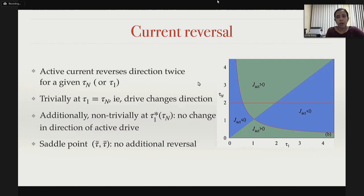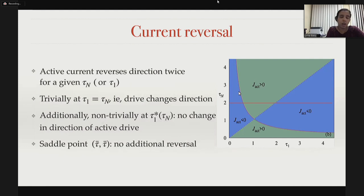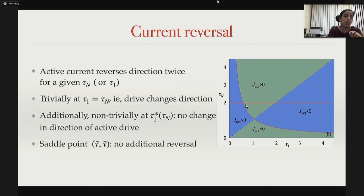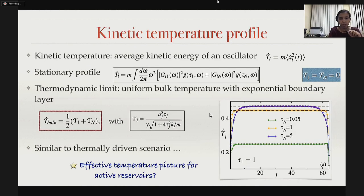Regarding current reversal: here is a plot of the current in the tau_1–tau_N plane, where green and blue shaded regions show where the current is positive and negative. Varying tau_1 while keeping tau_N fixed, the current goes negative, then positive, then negative again. There is a non-trivial curve where the current is zero even though there is a finite activity drive across the system. This zero-current curve exists at all values of tau_1, tau_N except where the current is definitively positive or negative. This is also an interesting result absent in thermally or equilibrium-reservoir driven harmonic systems.